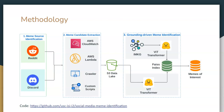We then repeat the same for the potential memes present in the S3 data lake, embedding them using a visual transformer and computing the cosine similarity between the potential memes and the memes present in IMKG. If the similarity value is above a certain threshold, we classify them as memes of interest and use that data to answer research questions.